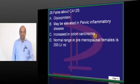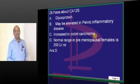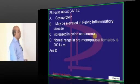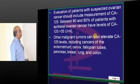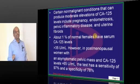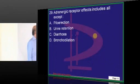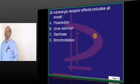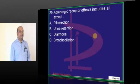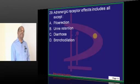CA-125 is a glycoprotein. It is increased in colon cancer and even in non-malignant conditions like pelvic inflammatory disease. The normal range in premenopausal women is around 35 units per ml, not 200. CA-125 will be found elevated in about 1% of premenopausal women, but that does not signify ovarian cancer.